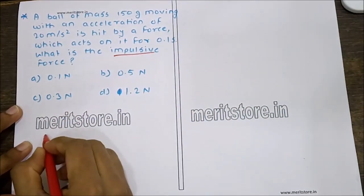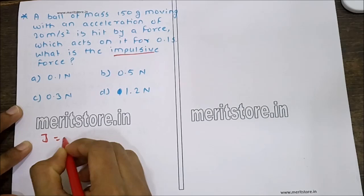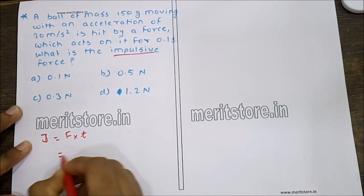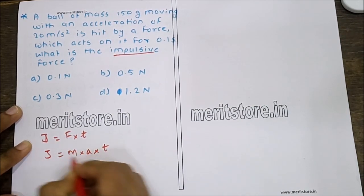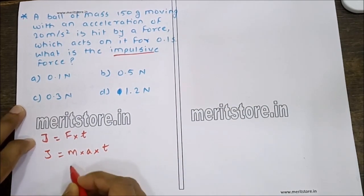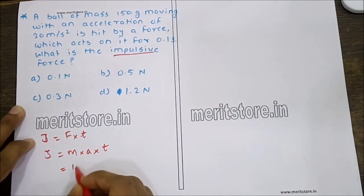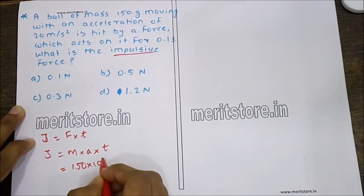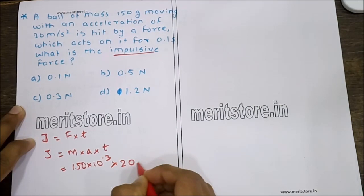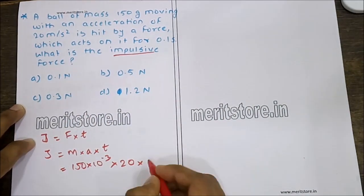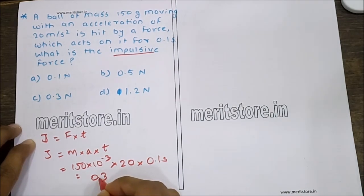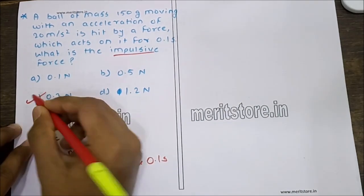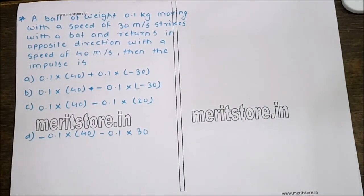The formula for impulse J is force × time, and force = mass × acceleration. So J = mass × acceleration × time = 150×10⁻³ × 20 × 0.1 = 0.3 N. Hence option C is the correct answer.